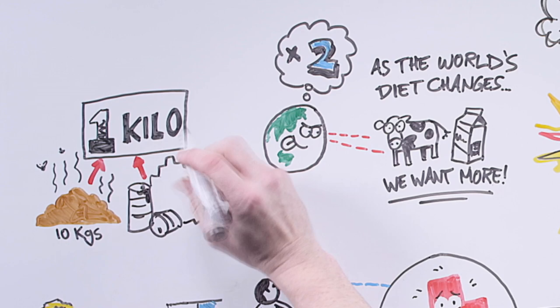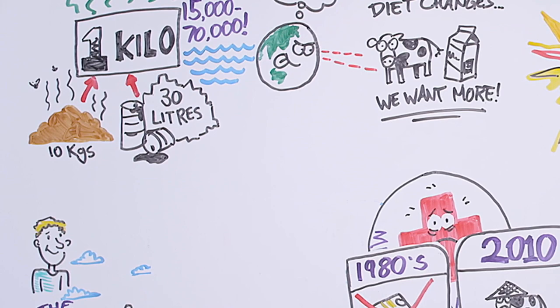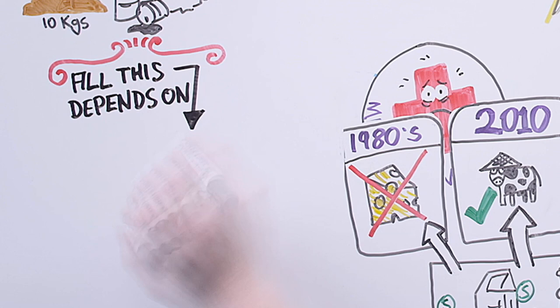Because producing a kilo of meat takes 10 kilos of fertiliser, 30 litres of oil, creates 4 tonnes of greenhouse gas, and uses between 15,000 and 70,000 litres of water in a world where by 2050, one-third of the globe's population is going to face water shortages.